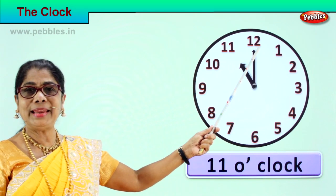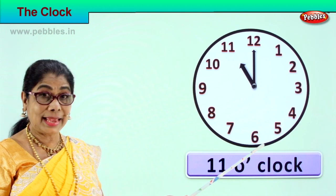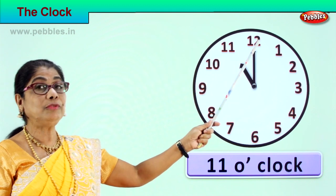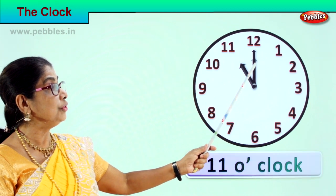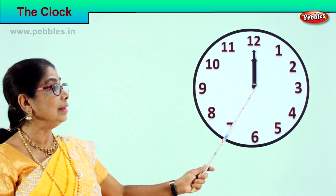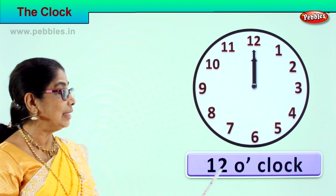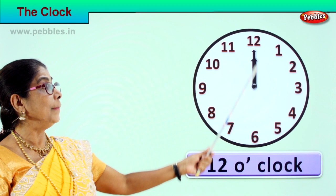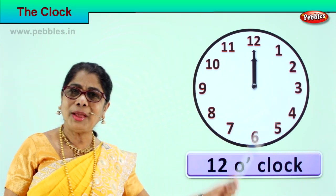Now the minute hand goes from one, two, three, four, five, six, seven, eight, nine, ten, eleven — and it comes back to twelve. The hour hand from eleven shifts to twelve. So both hands are now pointing towards twelve. How do you read this time? You read it as twelve o'clock. The hour hand is on twelve, the minute hand is on twelve — twelve o'clock. Now do you know how to read the time on the clock face?